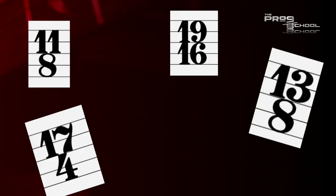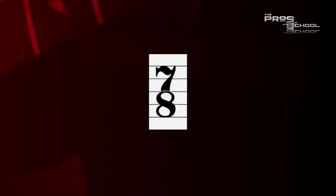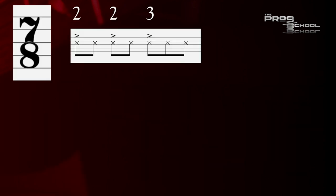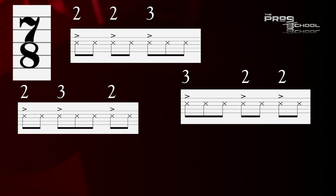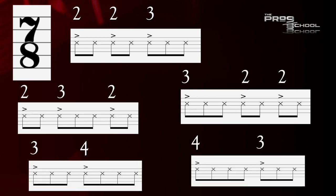The bigger the meter you choose, the more options you have for subdividing it. 7/8, for example, could be divided as 2-2-3, or 3-2-2, or 2-3-2, or 4-3, or 3-4.